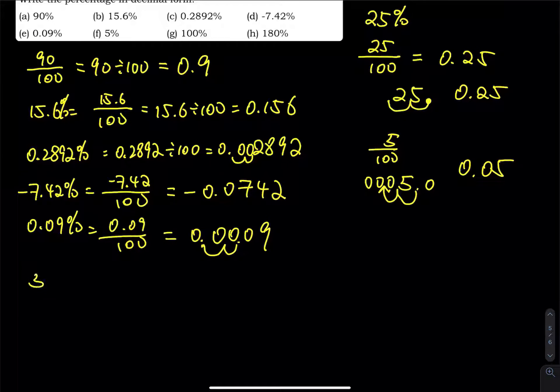And then we have 5%. 5% is 5 divided by 100. That is 0.05.